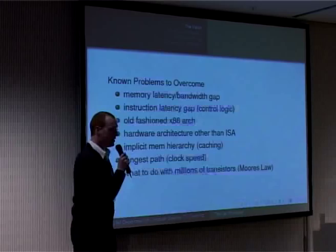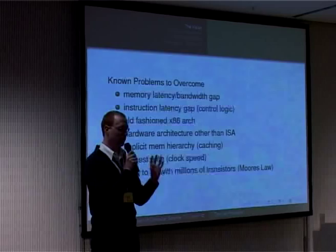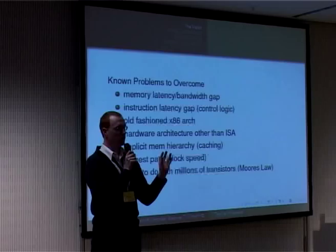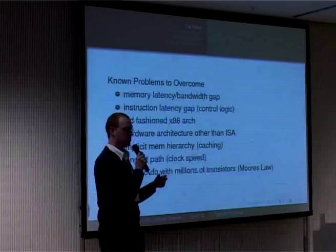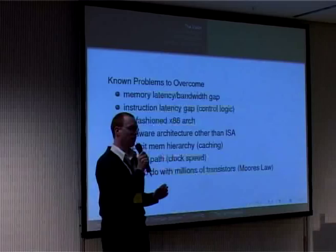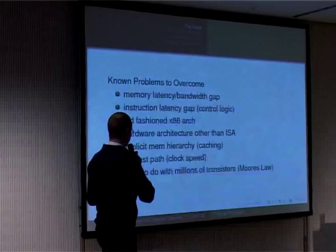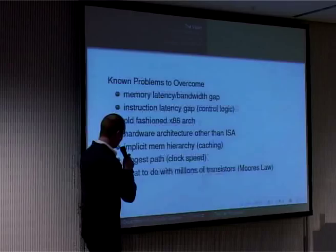The longest path determines how fast a processor can be clocked. If the longest pipeline stage is very long, you have to reload all these transistors. Either you use a very high voltage — but it may burn — or you introduce a longer, deeper pipeline with very small pipeline stages to shorten the longest path. That's what Intel did, and we can see the Netburst architecture with 20 — or maybe 30 — pipeline stages is not the best architecture.